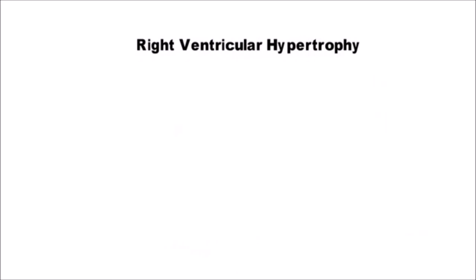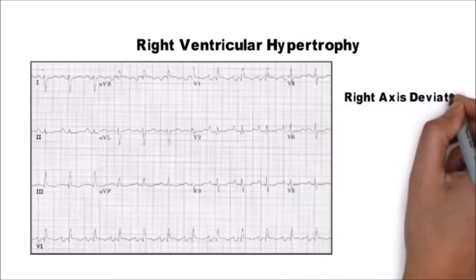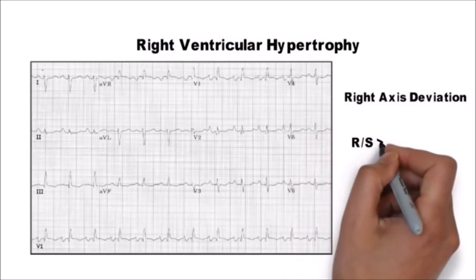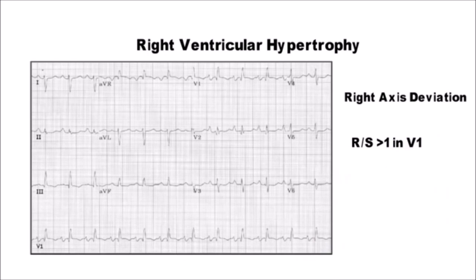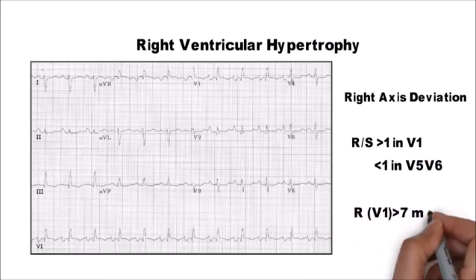Whereas in right ventricular hypertrophy there will be right axis deviation, R by S ratio more than 1 in V1 and less than 1 or equal to 1 in V5 or V6, and also R-wave in V1 is more than 7 mm. This is the simplest criteria to detect RVH.